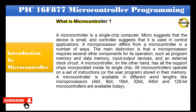What is a microcontroller? A microcontroller is a single-chip computer. Micro suggests that the device is small, and controller suggests that it is used in control applications. A microprocessor differs from a microcontroller in a number of ways. The main distinction is that a microprocessor requires several other components for its operation, such as program memory and data memory, input-output devices, and an external clock circuit. A microcontroller, on the other hand, has all the support chips incorporated inside its single chip.